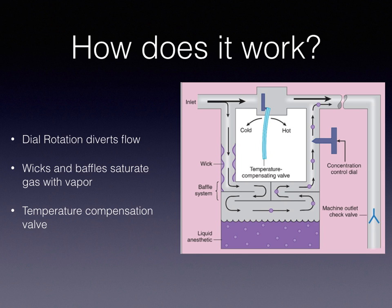So how does it work? The rotation of the dial on the right-hand side either restricts or opens the flow of gas, allowing more or less of the fresh gas flow to pass through the vaporizing chamber. The wicks are saturated with liquid anesthetic and ensure a large gas-liquid interface for more efficient vaporization. You can see the wicks are these purple dots on the left-hand side, and the baffles — the maze-looking thing at the bottom — also serve this purpose.